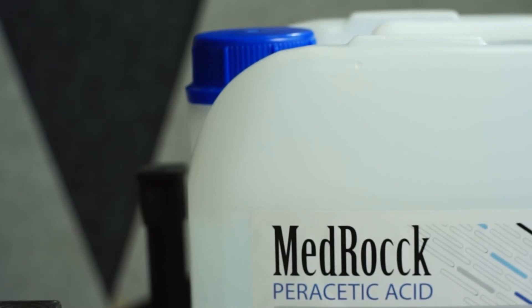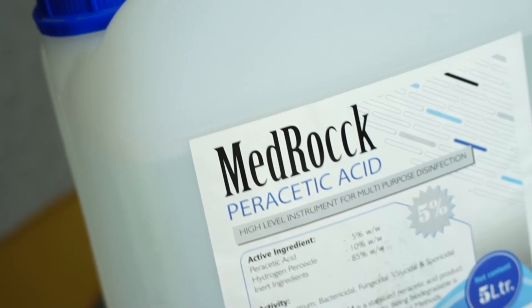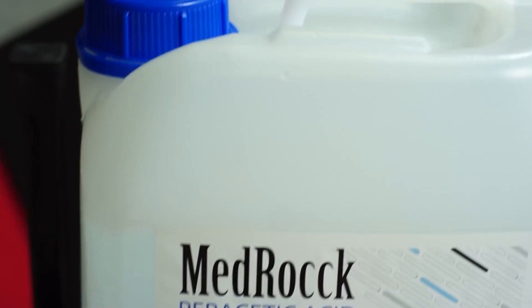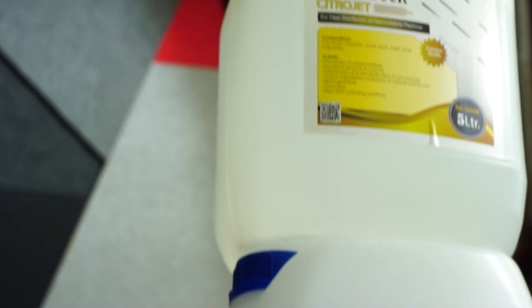5 liter Mauser cans are manufactured using virgin PVC material, designed to give maximum strength. It comes with a handle and stackable design, which not only gives safety during handling but also saves space.